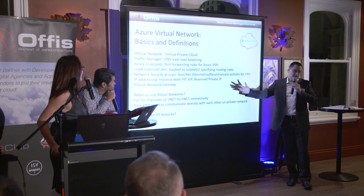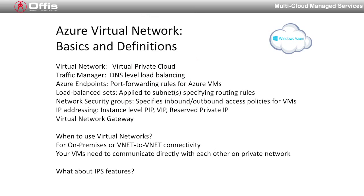Azure has a very similar architecture because it's compute and networking — they all work the same. Virtual networks is very similar to virtual private clouds. Traffic manager is the DNS and load balancer. The endpoint is where you do the translation to the gateway and port management — that's how you get to the internet. Load balance sets are where you put your applications and subnets. Network security looks after groups in terms of users, inbound, outbound, and access points for all VMs. You get five IP addresses and now 16 NICs, whereas you used to get one, which made it very hard to separate internal versus external. The virtual network gateway is how you get to the internet.